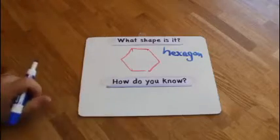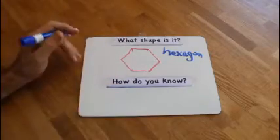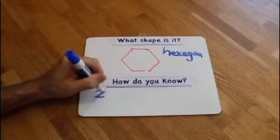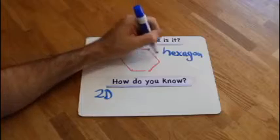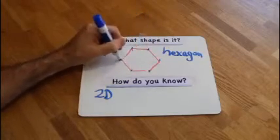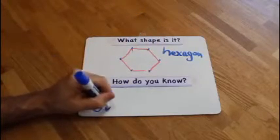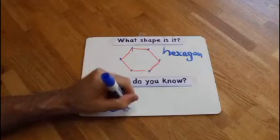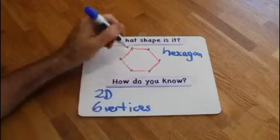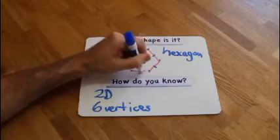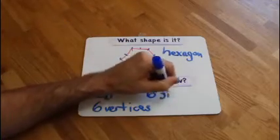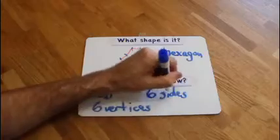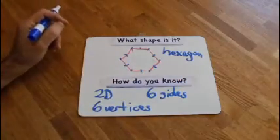How do you know? Well, it's flat. It's two dimensional or 2D. It has 1, 2, 3, 4, 5, 6 vertices or corners. And it has 1, 2, 3, 4, 5, 6 sides. 6 sides. That's what makes it a hexagon.